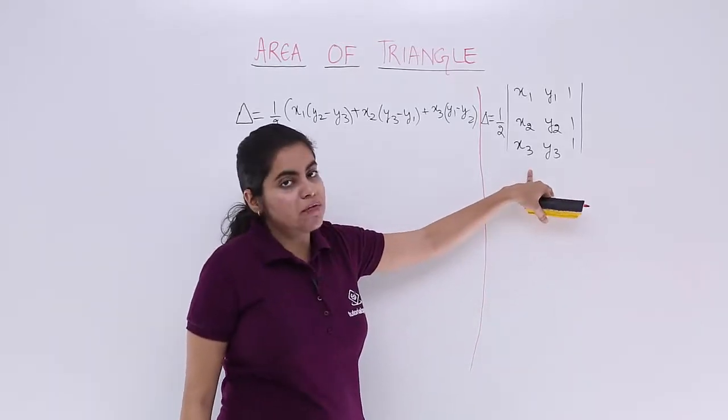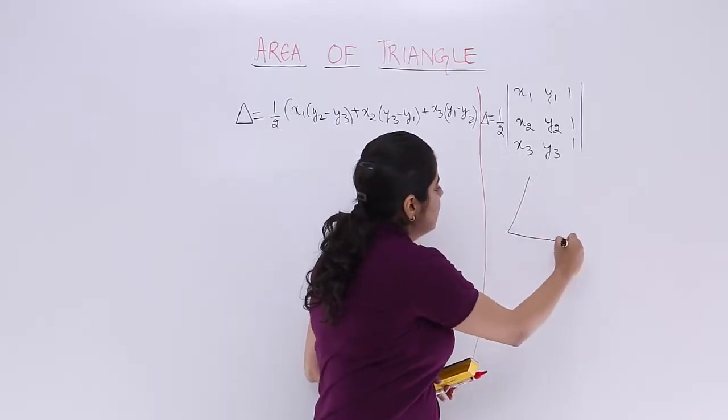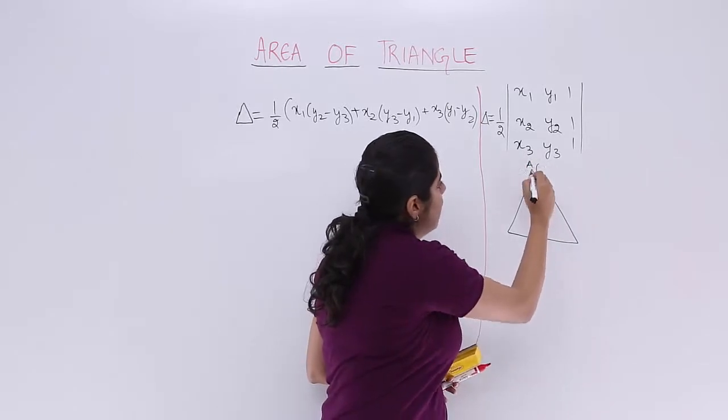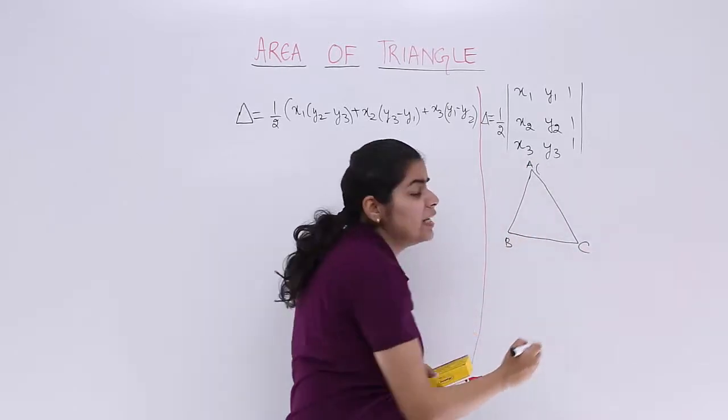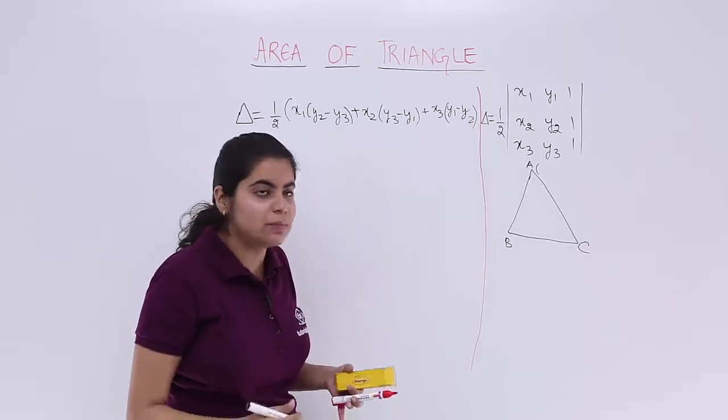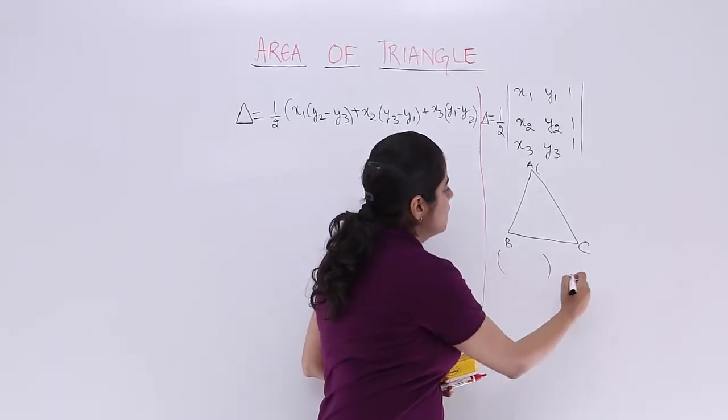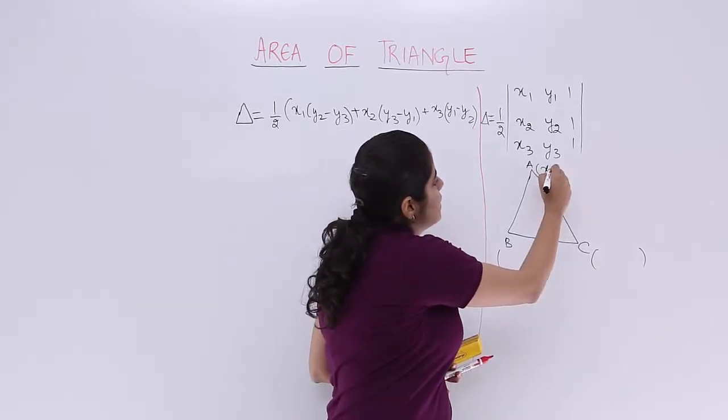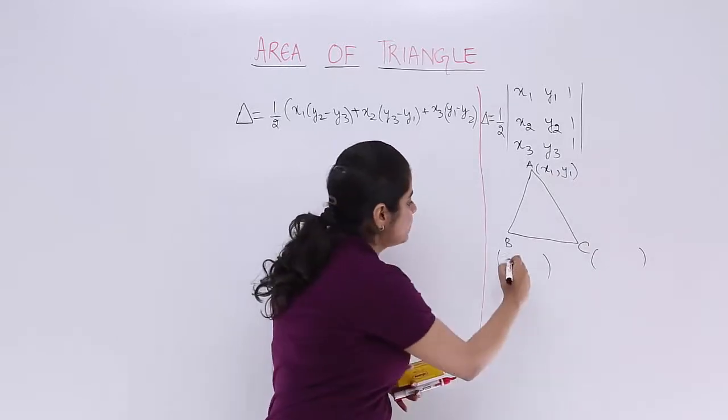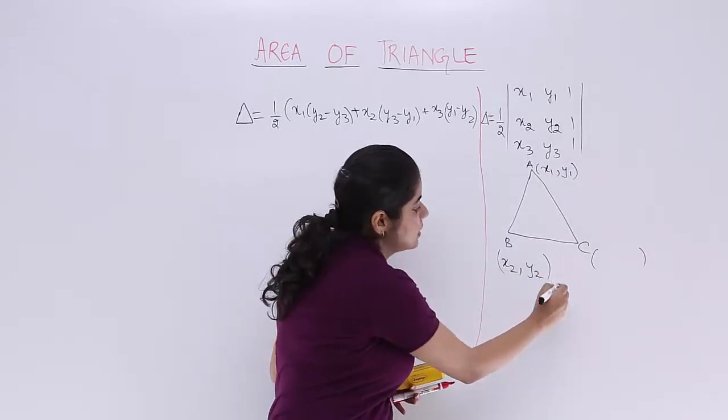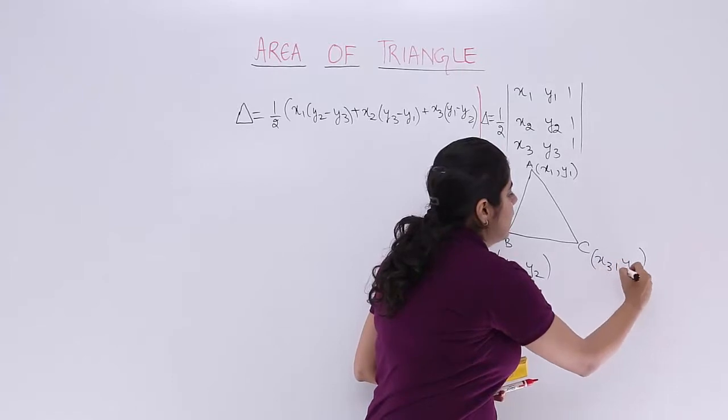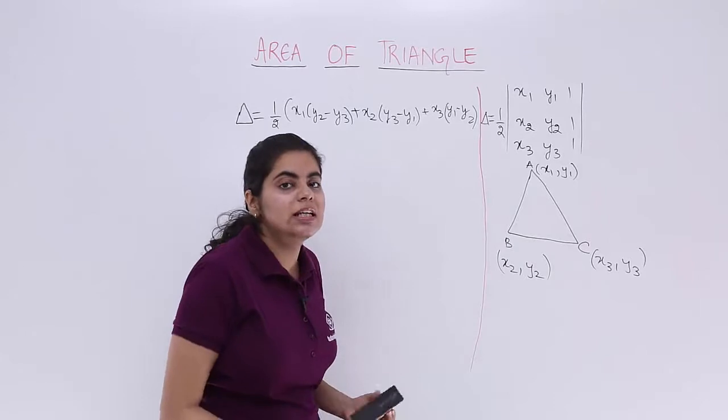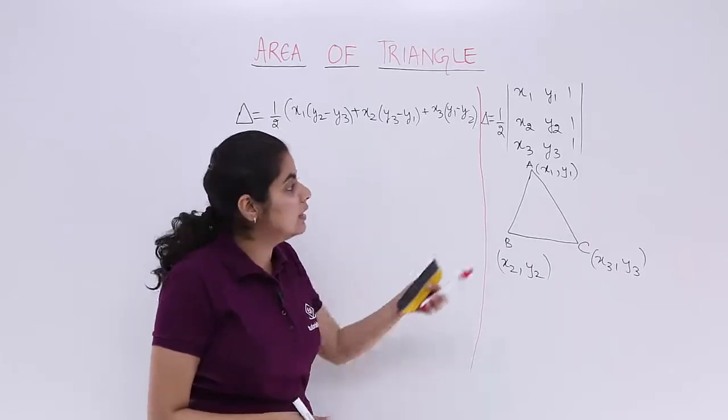If in the determinant form you see, we have a triangle and that triangle is having three vertices. The triangle has vertices a, b, c, it can be any triangle. Three vertices are there and the vertices are in the form of ordered pair. So it is x1, y1 as the first vertex, x2, y2 as the second vertex, x3, y3 as the third vertex. Now when these vertices are known to us, I am concerned about finding the area of this triangle.